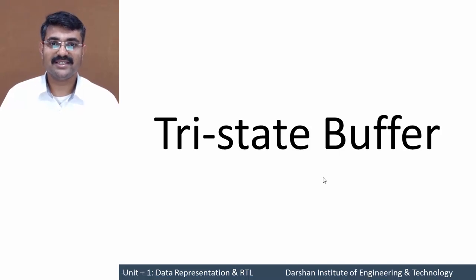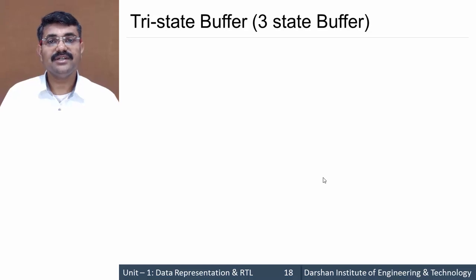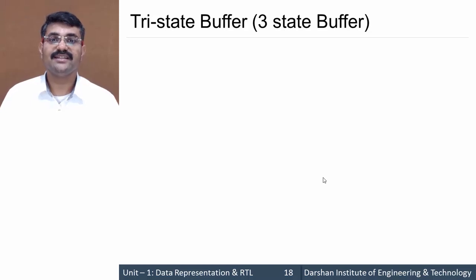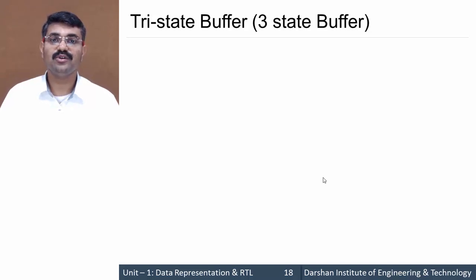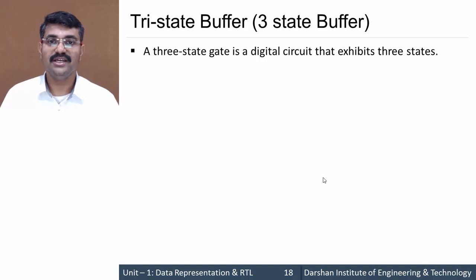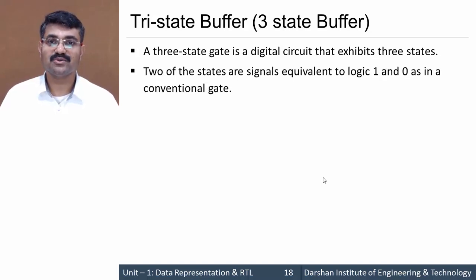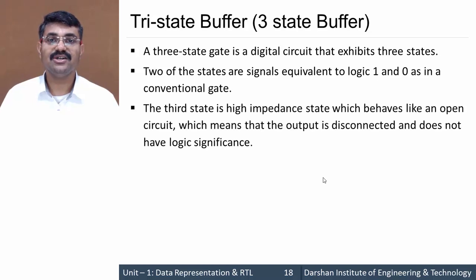In this session we'll discuss tri-state buffer. In digital electronics, a buffer has two states: one is input state and another is output state. Whatever we give as input, we get the same as output but with some delay. A buffer is used when we want to add some delay to logic circuits. A tri-state buffer is a buffer with three states — two states are as usual: input and output with logic states either zero or one, and we are adding one more state.